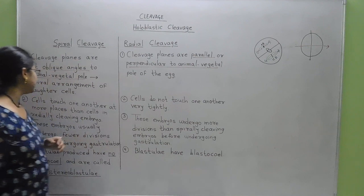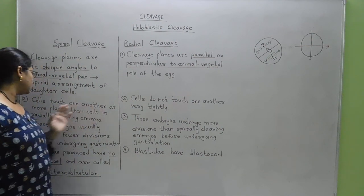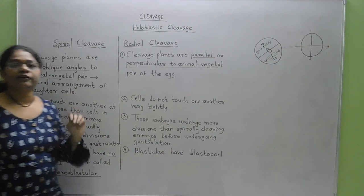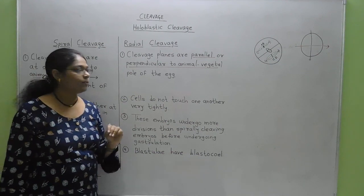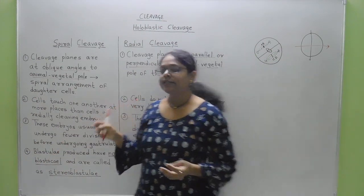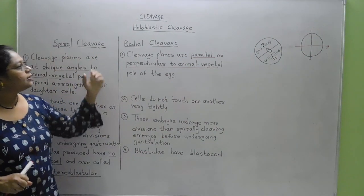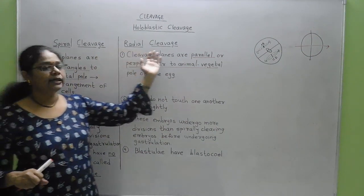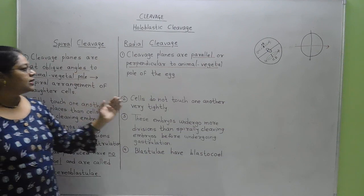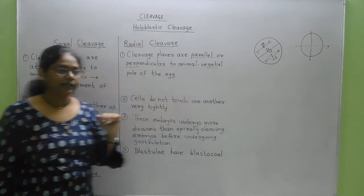The next difference is that in spiral cleavage, cells touch one another at more places than in the radially cleaving embryo. In the spirally cleaving embryo, cells are in greater contact with one another, whereas in the radial cleavage, cells do not touch one another very tightly.